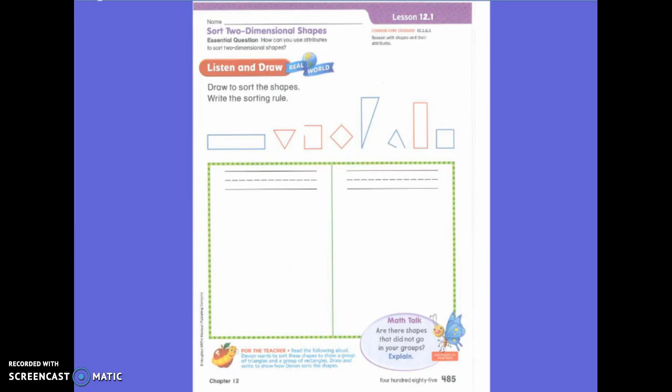Devin wants to sort these shapes. Do you see these shapes right here? He wants to sort them to show a group of triangles and a group of rectangles. So draw to show how Devin sorts the shapes.